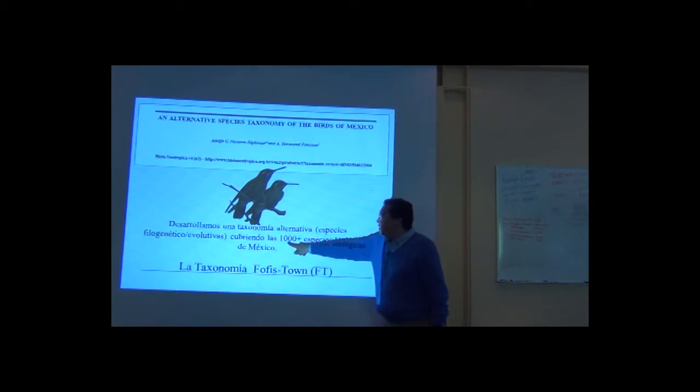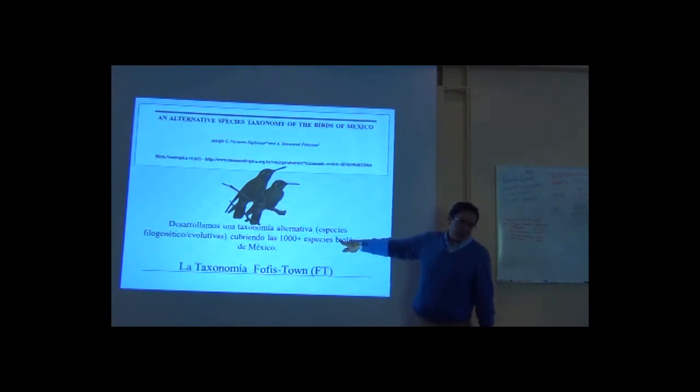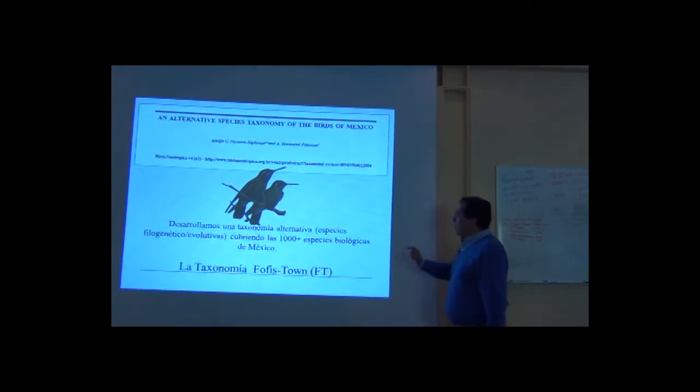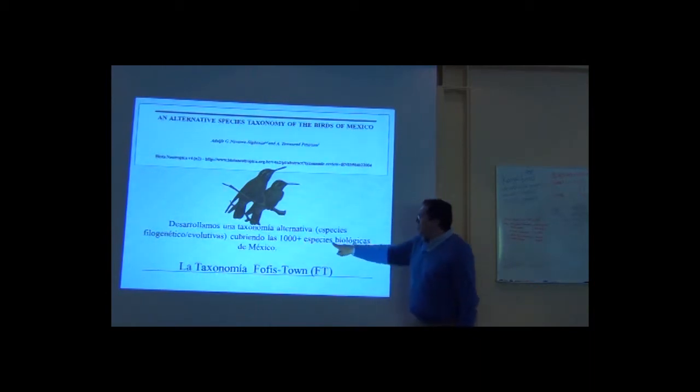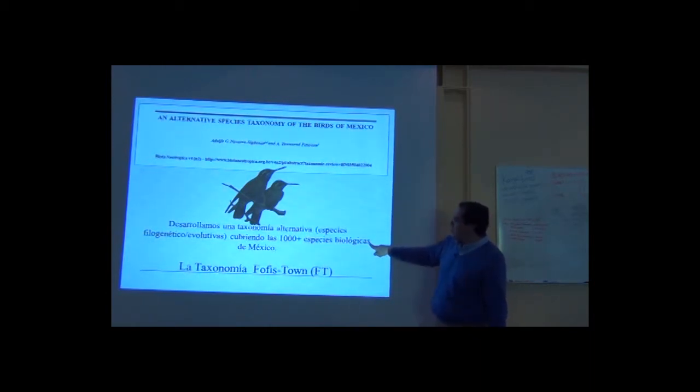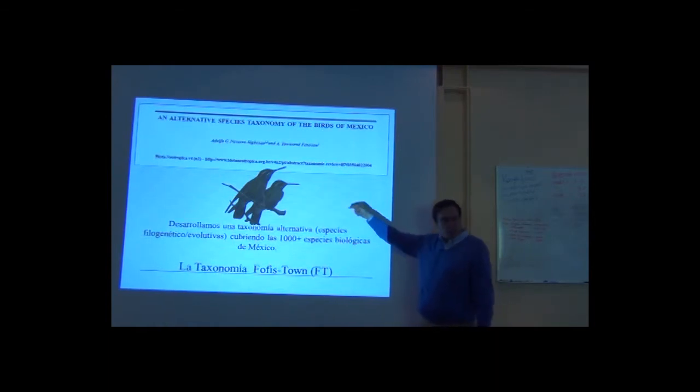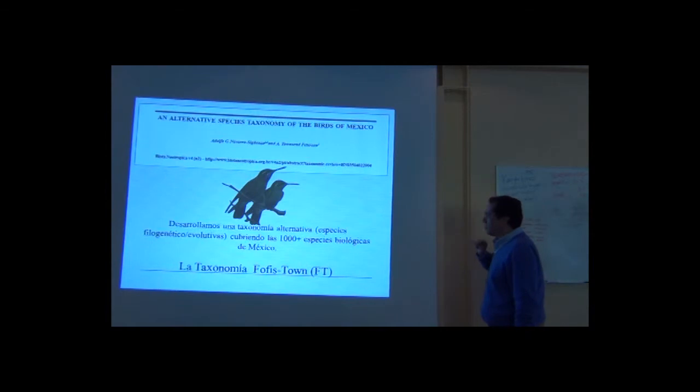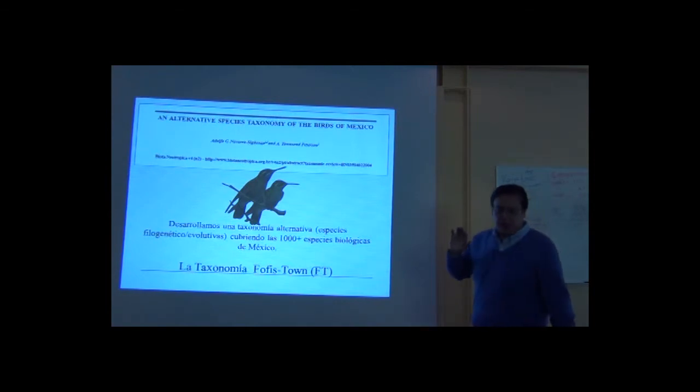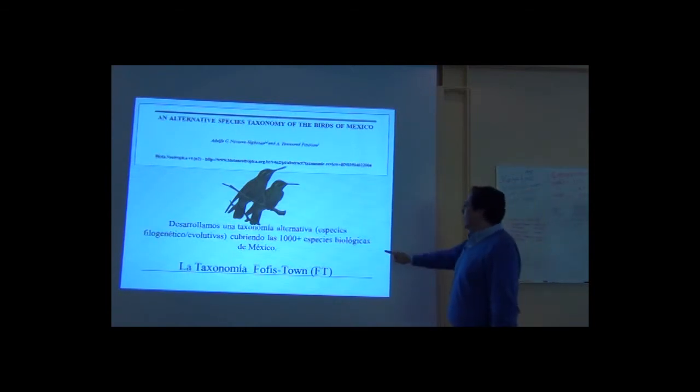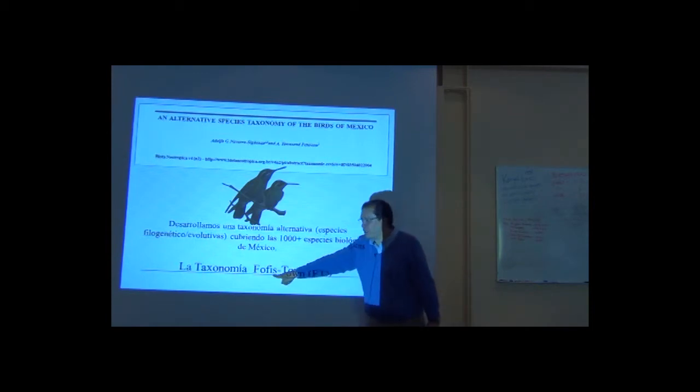We analyzed more than 1,000 species of Mexican birds. We saw specimens of all of them. We used as a basis of comparison species that were defined by the biological species concept, that is the concept that the committee of the checklist uses. And we produced this beautiful work that is called an alternative species taxonomy of the birds of Mexico. By Adolfo and Town, from here, the Fofis Town taxonomy. I am Fofis. He's Town, so that's FT taxonomies.